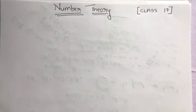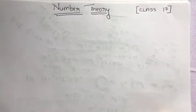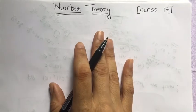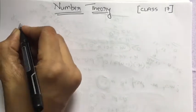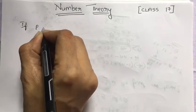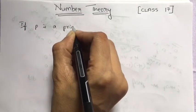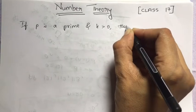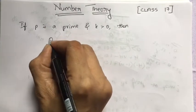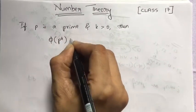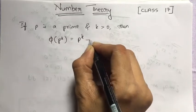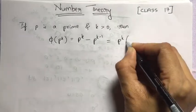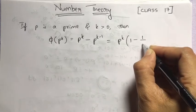Today's class, let us derive a formula that will allow us to calculate the value of phi of n directly from the prime factorization of n. If p is a prime and k is any integer greater than 0, then the formula says phi of p^k is equal to p^k minus p^(k-1), which is the same as writing p^k into (1 minus 1/p).